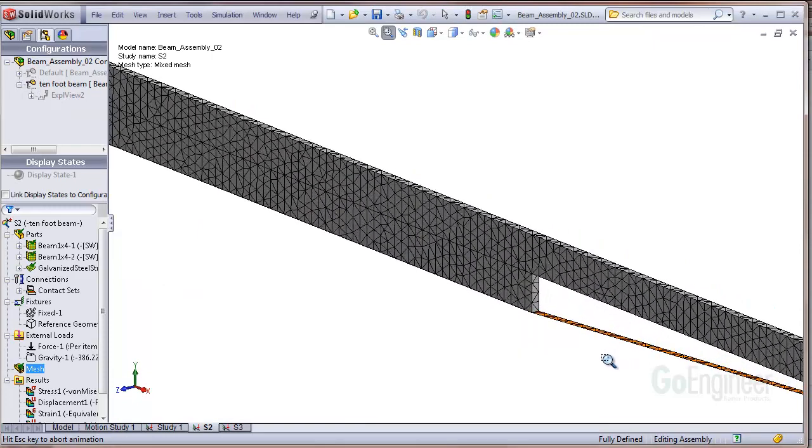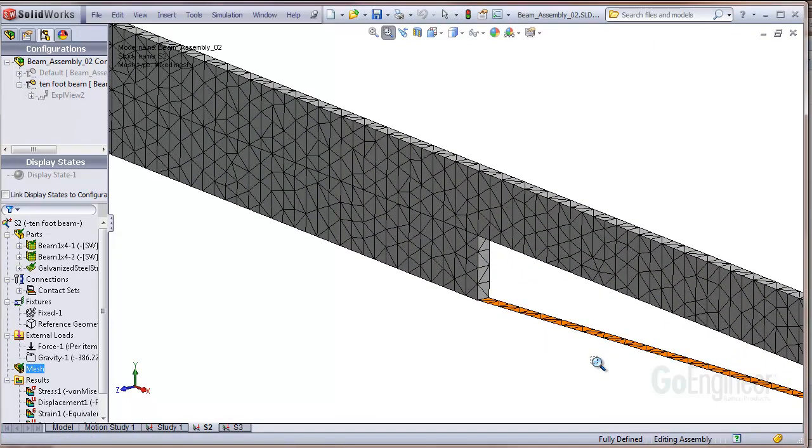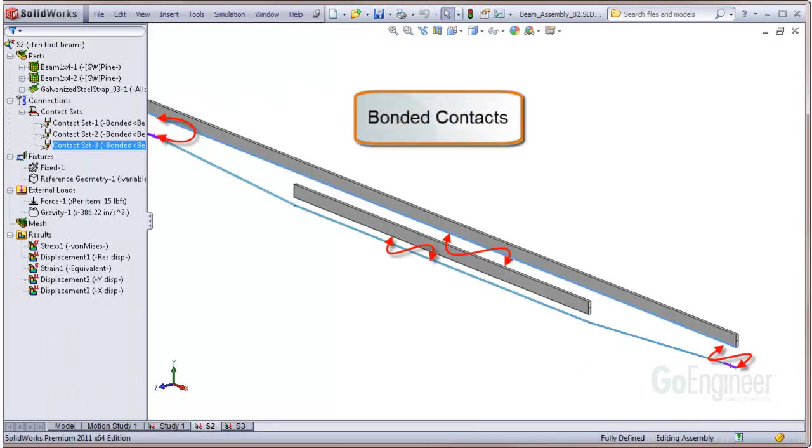This was set up using shell elements for the steel strap and solid elements for the wooden beams. Bonded contacts were located along the steel strap where it's attached to the beams and between the two beams.